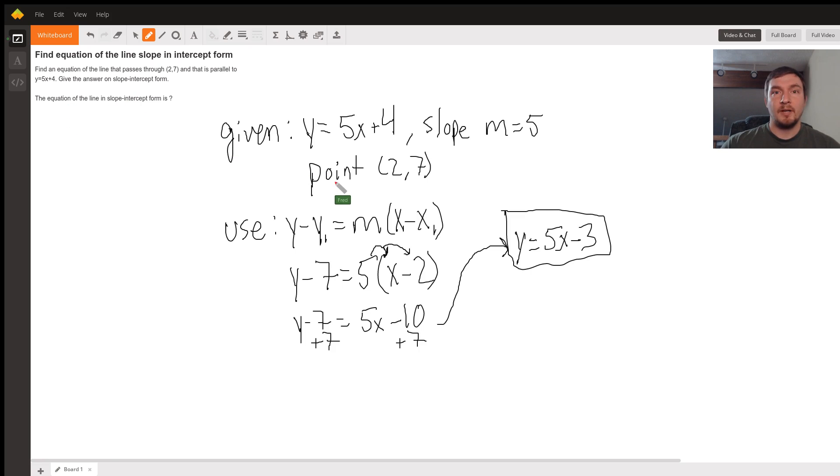So what we need to start with, look at the information that we're given. We are given that y equals 5x plus 4. That's already in slope-intercept form: y equals m, which is 5x, plus b, the y-intercept, which is 4. So I wrote off to the side here, m equals 5. That's our slope. And the point that we're given is (2,7).